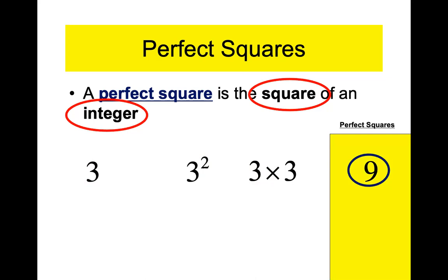There are an infinite number of perfect squares, but there are also a lot of numbers that are not perfect squares. Eight is not a perfect square — there's no number times itself that equals eight. Four squared is 16, and 16 is the next perfect square. Notice there are numbers between nine and 16 — like 10, 11, 12, 13, 14, 15 — that are not perfect squares.